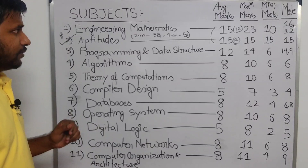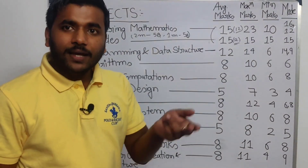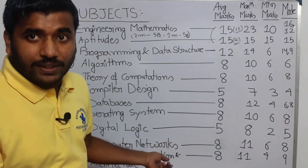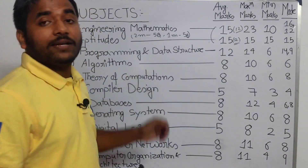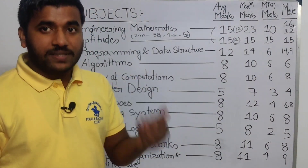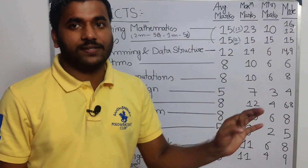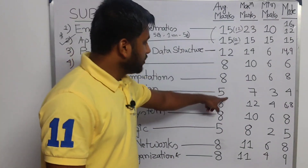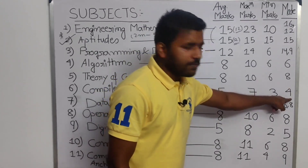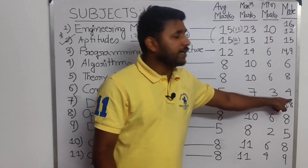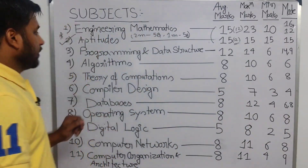After TOC comes Compiler Design. I placed Compiler Design after TOC because Theory of Computation is a prerequisite — you need that knowledge to learn Compiler Design. It is actually a very easy subject. The average marks is 5, maximum is 7, minimum is 3, and the mode — most frequently occurring marks — is 4 marks from Compiler Design.